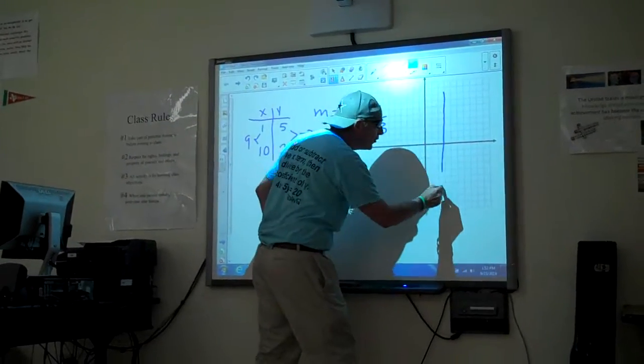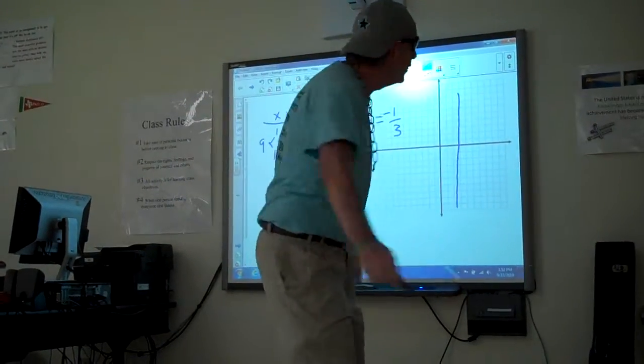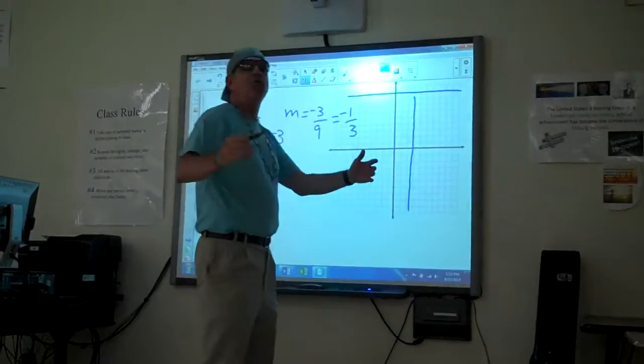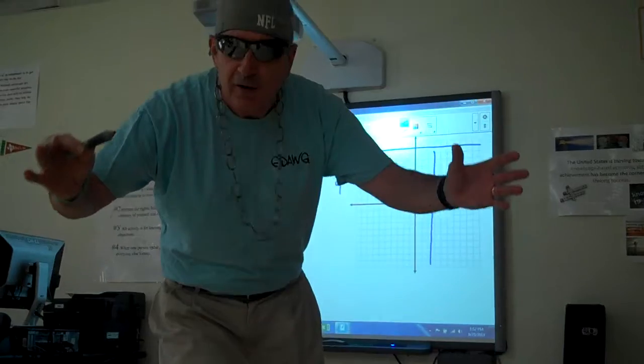But x equals a number is a vertical line. It is called no slope, infinite slope or undefined. But y equals a number is a horizontal line. Because the coefficient is zero, the slope is zero every time. Now take it to the finish.